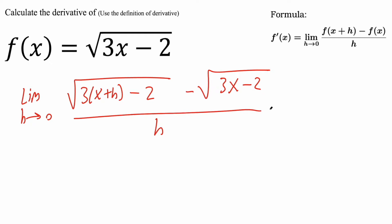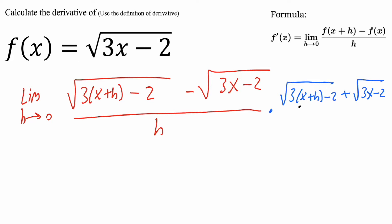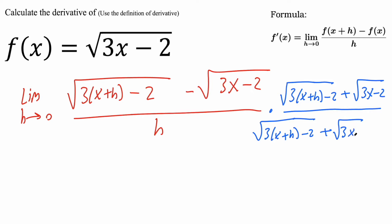What we need to do next is multiply by the conjugate. So we're going to keep this piece, but instead of having a negative, we're going to put a plus. So we'll have the square root of three(x plus h) minus two, plus the square root of three x minus two. Now if you do it for the numerator, you also have to put it onto the denominator — the same exact thing: the square root of three(x plus h) minus two, plus the square root of three x minus two.